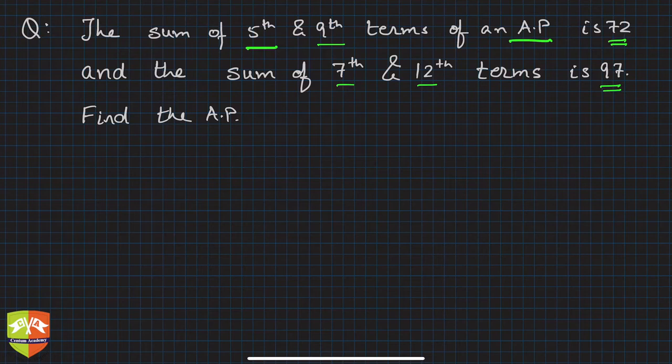And you know when it is being asked to find the AP, it means to find the first term and the common difference. Sum of fifth and ninth terms of an AP is 72, so this is how you should proceed.